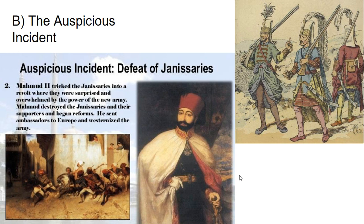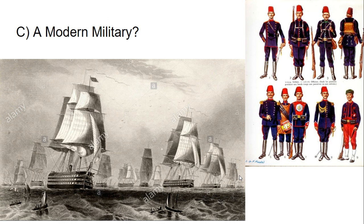By bringing in modern military tactics and bringing in Europeans — specifically French people — to help train Ottoman commanders in modern military techniques and new types of technology, and by crushing these entrenched forces, Mahmoud II catapulted the Ottoman Empire into the ranks of powerful European militaries. He also started to commission a modern navy with much more advanced ships using European techniques, going into significant debt to do so because shipbuilding is very expensive.